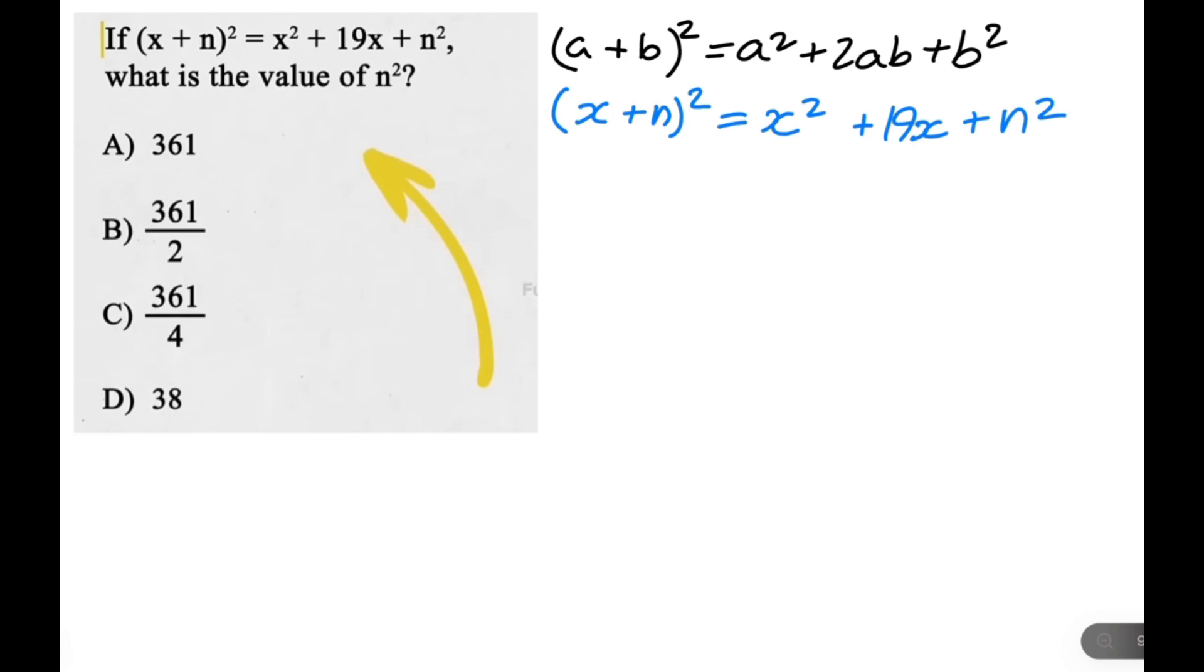So let's make another version of this equation. Let's expand it just how we expanded it in the first equation. So we can say that x plus n squared is equal to x squared plus 2xn plus n squared.